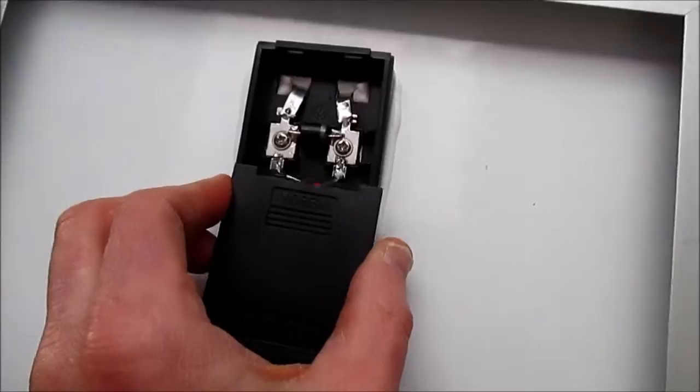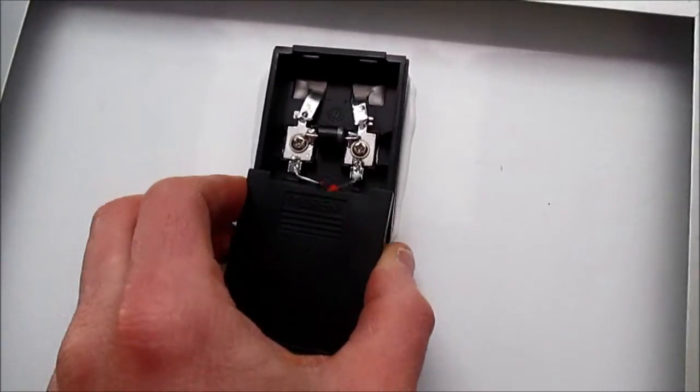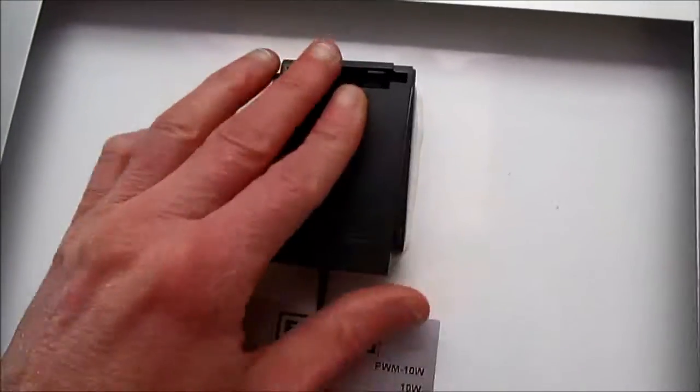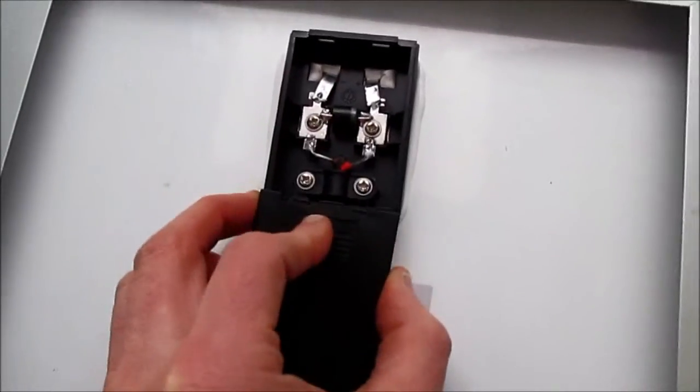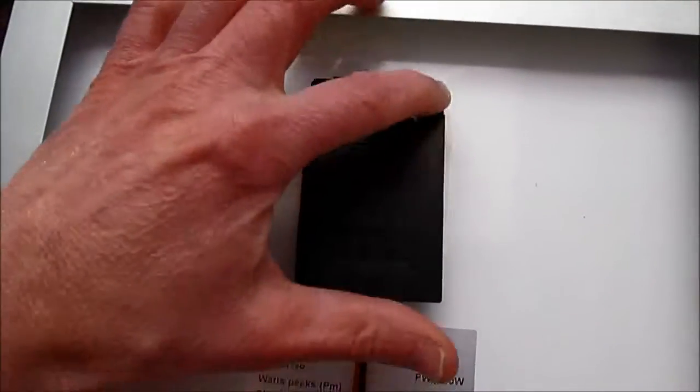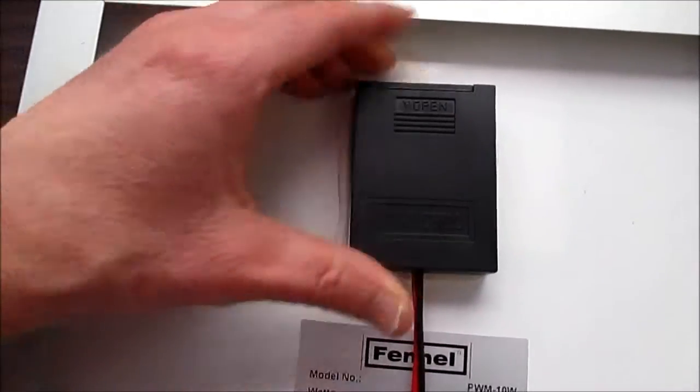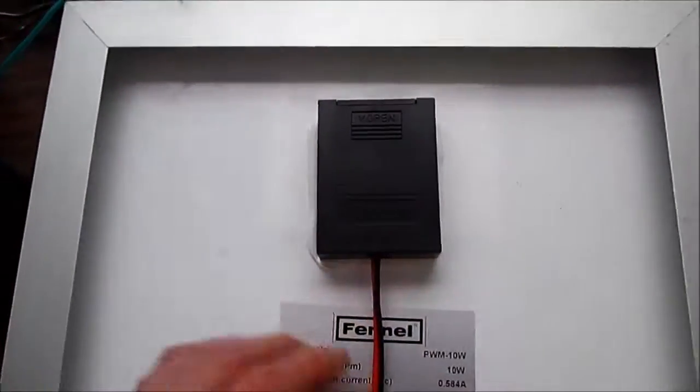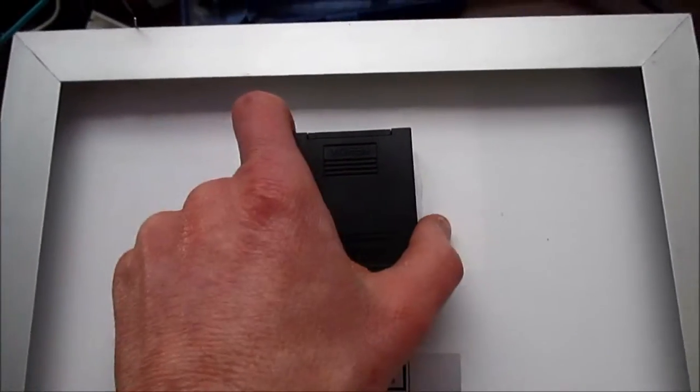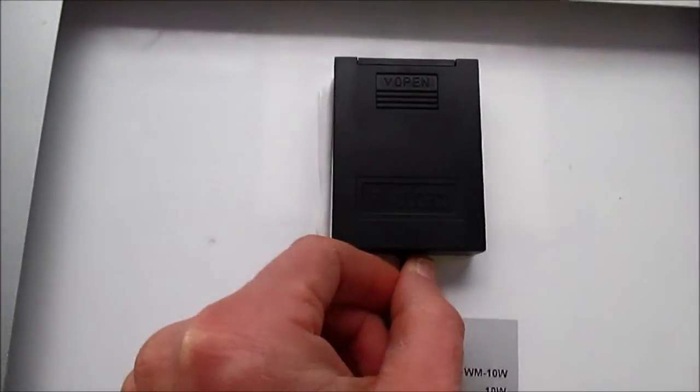So you have to kind of be careful with that if you do mount it outside. And you have to get that in the groove. It has like a little groove you have to line that cover on and it snaps closed. But being underneath of the panel, it shouldn't have a problem getting wet.